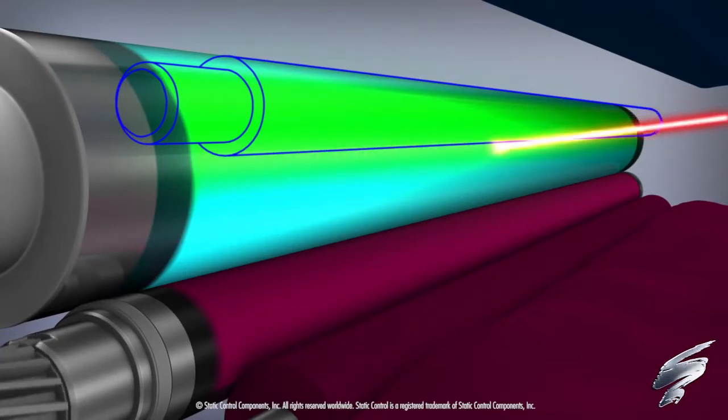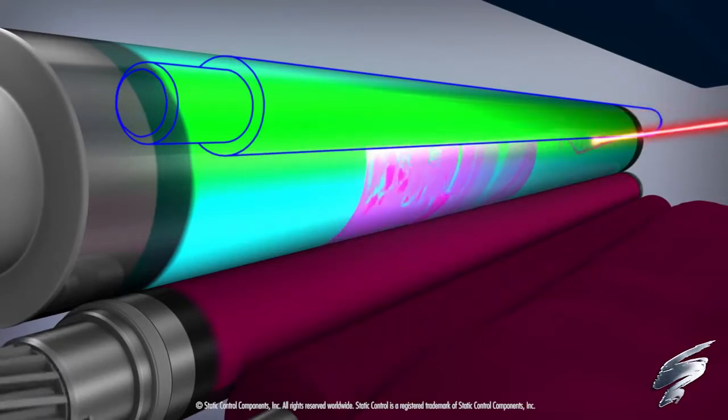The OPC drum is then exposed to a laser, which forms the image. This area is more positively charged than the areas not exposed to the laser.